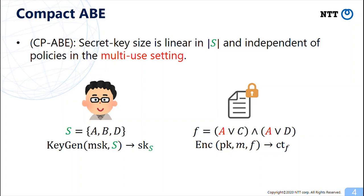We first explain the compactness of ABE since it is easy to see. In a CP-ABE scheme, we call it compact if secret key size is linear in the attribute set size and independent of policies used in the scheme, even in the multi-use setting.